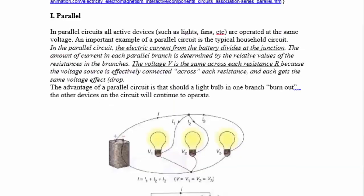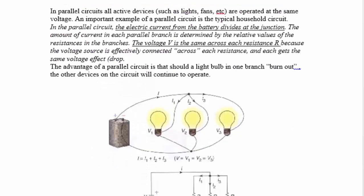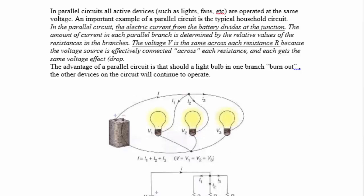Any electric circuit is composed of several components: the power supply (voltage source), the electric wires which represent the conductors that furnish the path for electrons or charges to move through, and the devices or appliances we need to operate — in our case, light bulbs. There are two ways we can connect three light bulbs.